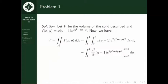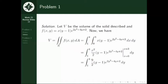Integrating with respect to x, we treat y as a constant. So we get the integral from 1 to 4 of (x squared over 2) multiplied by (y minus 1) times e raised to (2y squared minus 4y plus 2). Evaluating this with the limits of integration, we get the integral from 1 to 4 of (9 over 2) multiplied by (y minus 1) times e raised to (2y squared minus 4y plus 2) dy.